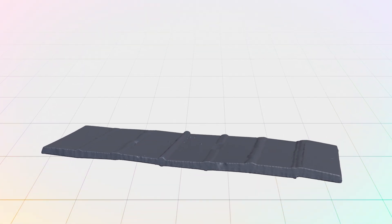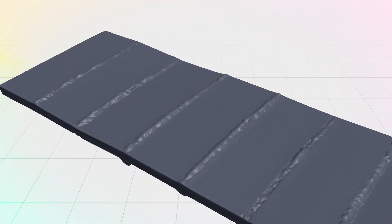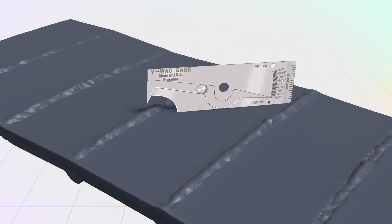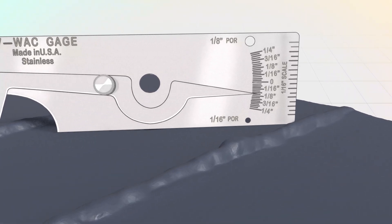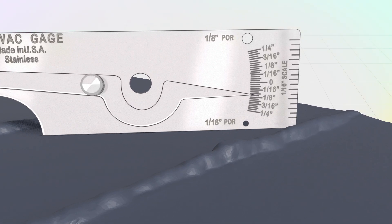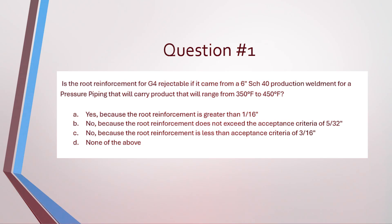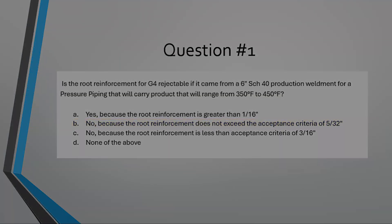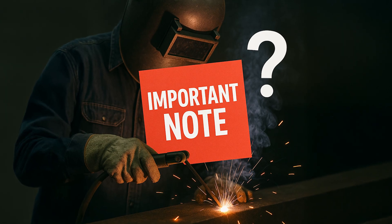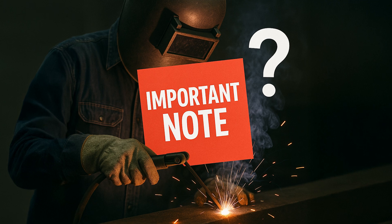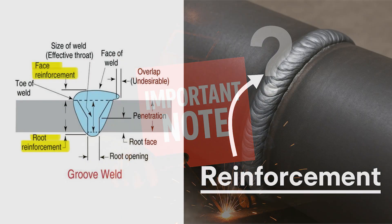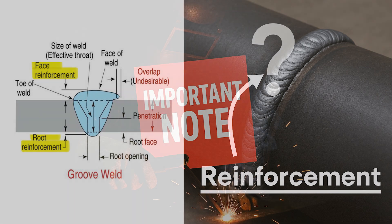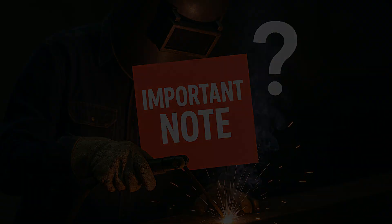Locate G4 and, since they're talking about root reinforcement, flip the groove plate and use the VWAG gauge. Measure the highest point of the root reinforcement — I measured 7/64 inch, which is under 5/32 inch, so it's not rejectable. The correct answer is B. Keep in mind that just because the question refers to pressure piping doesn't mean it applies only to the pipe specimen; the groove plate also has face and root reinforcements, so the same concepts can apply there as well.